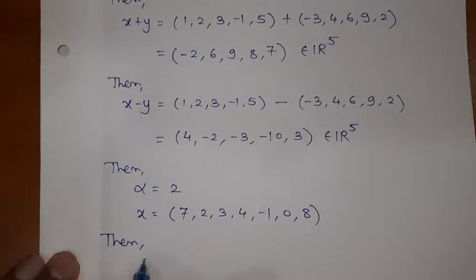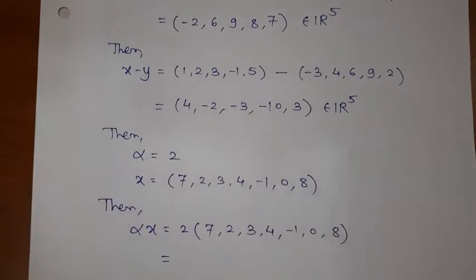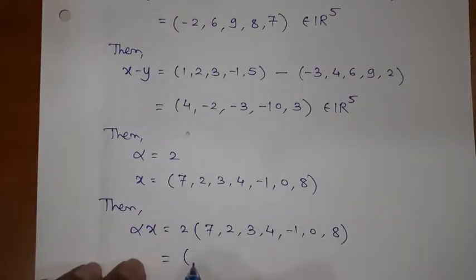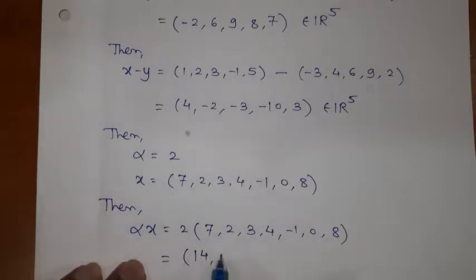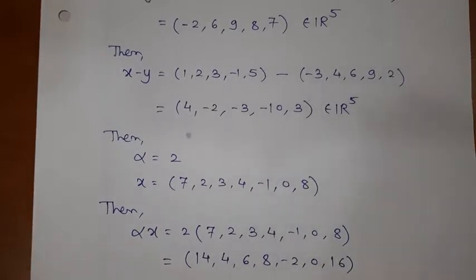Let us see how to calculate alpha X. 2 into X, I need to write it again. 2 into 7 is 14, 2 into 2 is 4, 6, 8, -2, 0 and 16. This is the required answer.